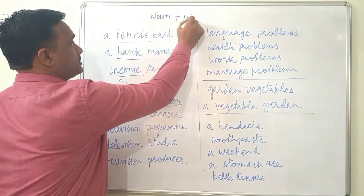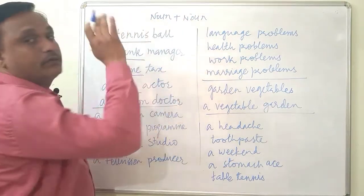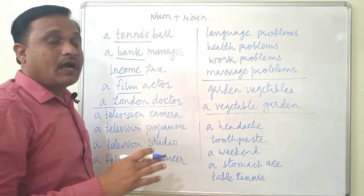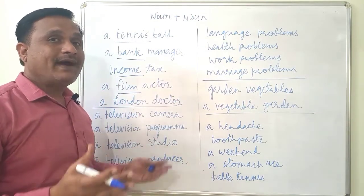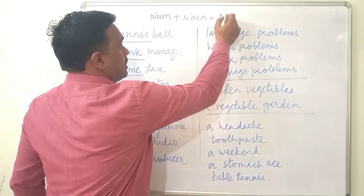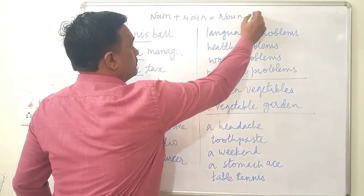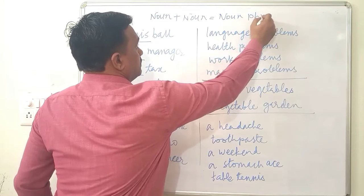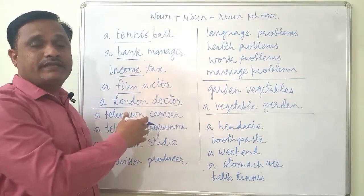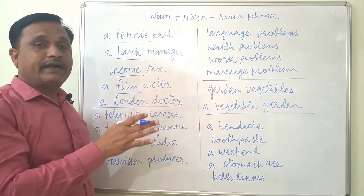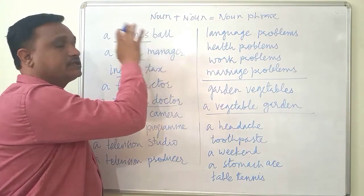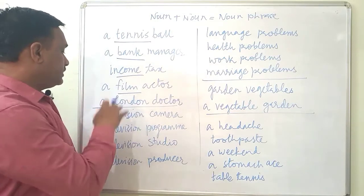Here we have a phrase where noun plus noun come together and form a new idea. This is called a noun phrase. These noun phrases are of different kinds; here we are talking about noun plus noun.